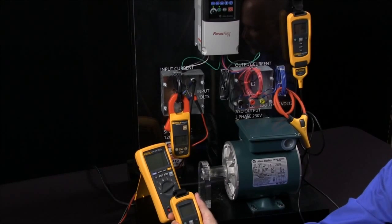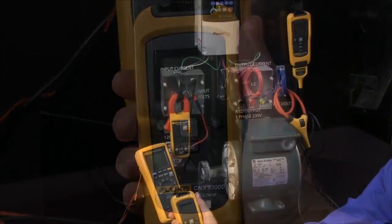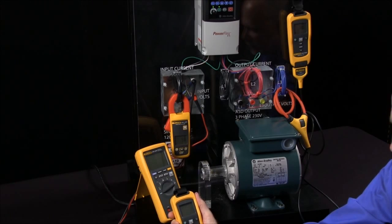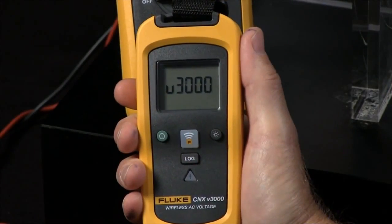How do we configure the CNX wireless multimeter to read data from its remote modules? Here we have a voltage module. The first thing that's important to do is make sure you've turned on your remote modules.